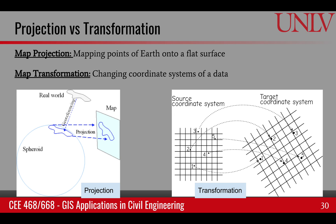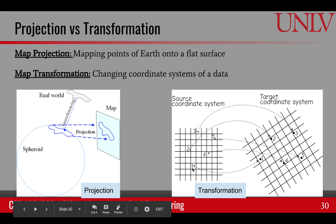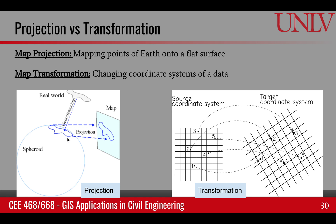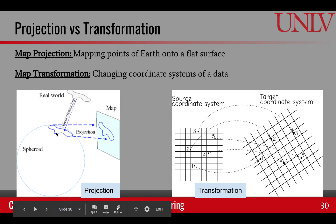The last part of this objective is the difference between projection and transformation. We covered projection in the last module. Projection is taking points on the Earth and putting them on a flat surface. Whereas transformation is taking one coordinate system and putting a different coordinate system on it. So if we have an image of the ground surface and we are trying to put latitudes and longitudes on it — georeferencing — that would be transformation. But if we are just trying to put it on a flat surface, that would be map projection.